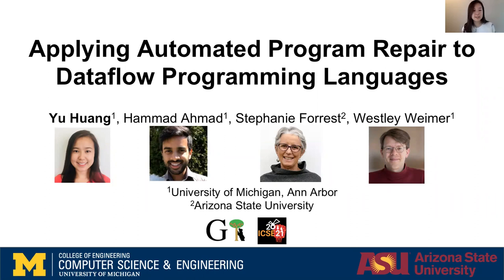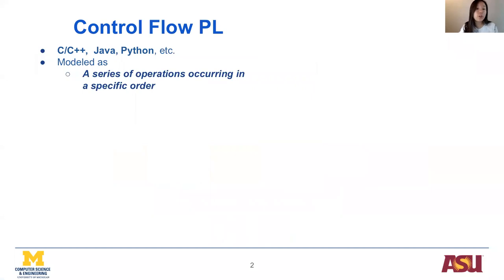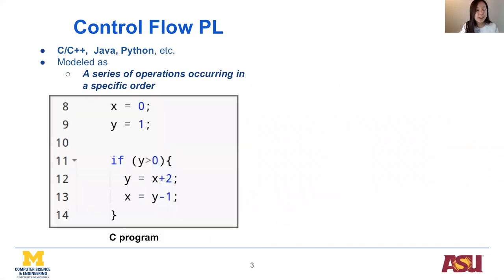In the past, a significant amount of research has been done to repair bugs in imperative programs, and almost all of it has focused on the control flow program language family — C, Java, and Python — where programs are modeled as a series of operations occurring in a specific order, as in this example of a C program.